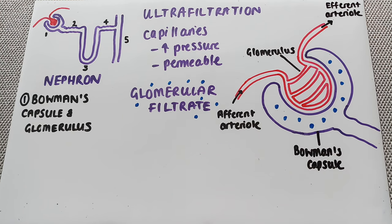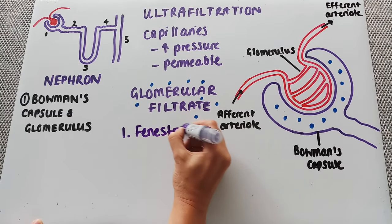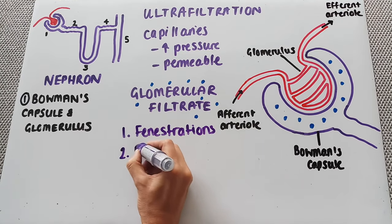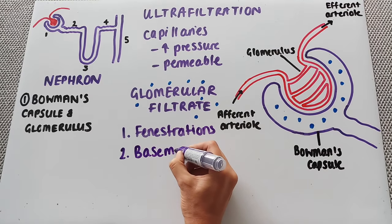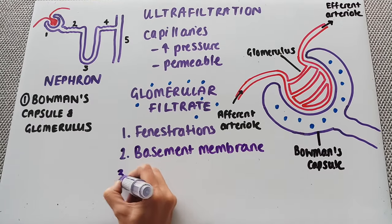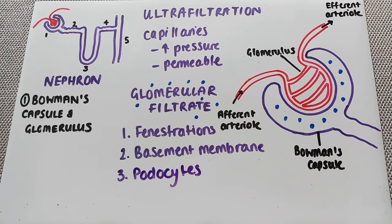In terms of your Bowman's capsule, there are three layers which make up ultrafiltration. The first layer is the fenestrations — little holes in the capillary walls. The second layer is the basement membrane. The third are the podocytes. These three things together form three filters which ensure that large molecules such as blood cells or proteins are unable to move from the glomerulus into the Bowman's capsule — only small molecules are actually able to get through.